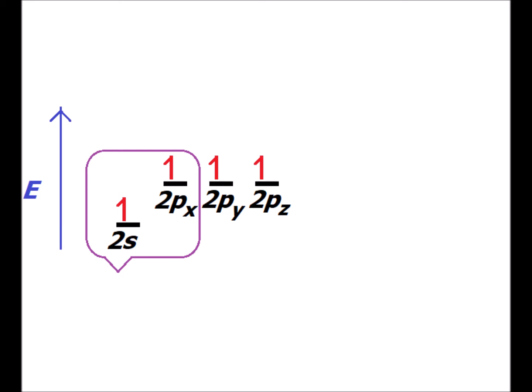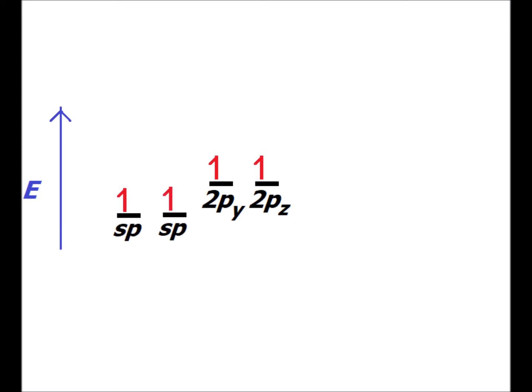So we come up with the idea of hybridization. Suppose that we mix — we hybridize — the 2s and the 2px orbitals. This mixing is shown as a coarse representation with a purple balloon around those two orbitals. In hybridization theory, we imagine that those two mix in such a way as to form two equally energetic sp orbitals, while the 2py and 2pz stay at the same energies they were before and remain unhybridized. This is the general scheme for sp hybridization in carbon.